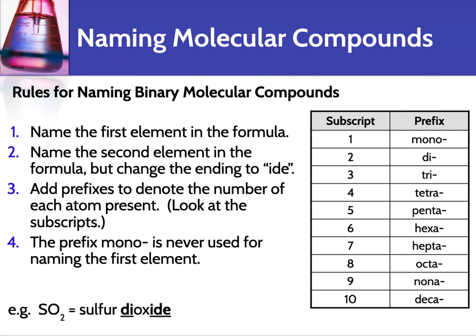Here's an example: SO2. S is sulfur, and there is only one of it, so we just say 'sulfur' — we don't say 'monosulfur.' The next element is oxygen, which becomes 'oxide,' and there are two of those, so we add 'di-' as a prefix, giving us 'sulfur dioxide.'